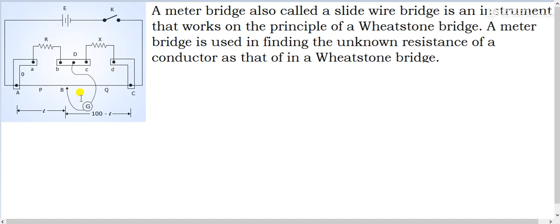This is a block diagram of how a meter bridge looks. It is also called a slide wire bridge. It is called a meter bridge because the wire from A to C is 1 meter or 100 centimeters in length. It is called a slide wire bridge because the jockey is slid over this wire.